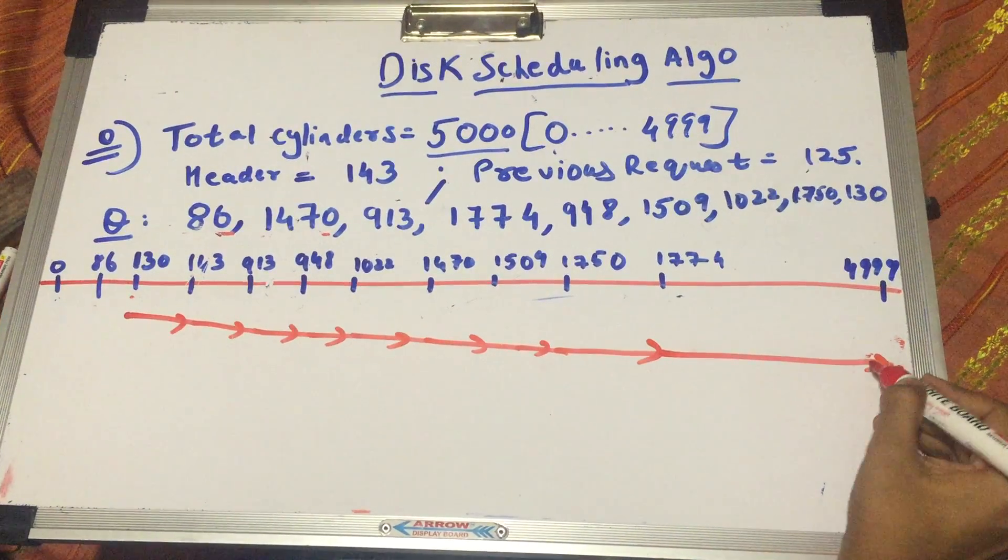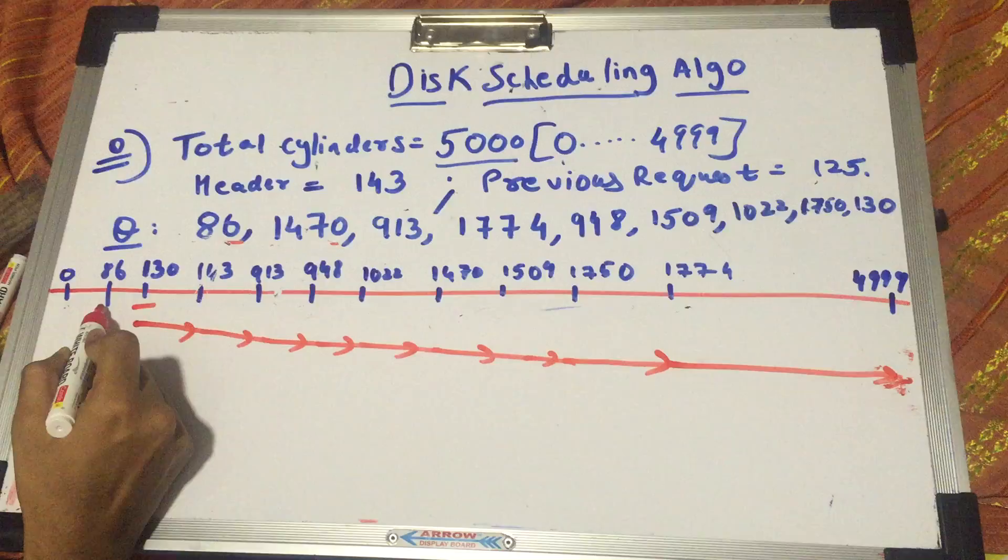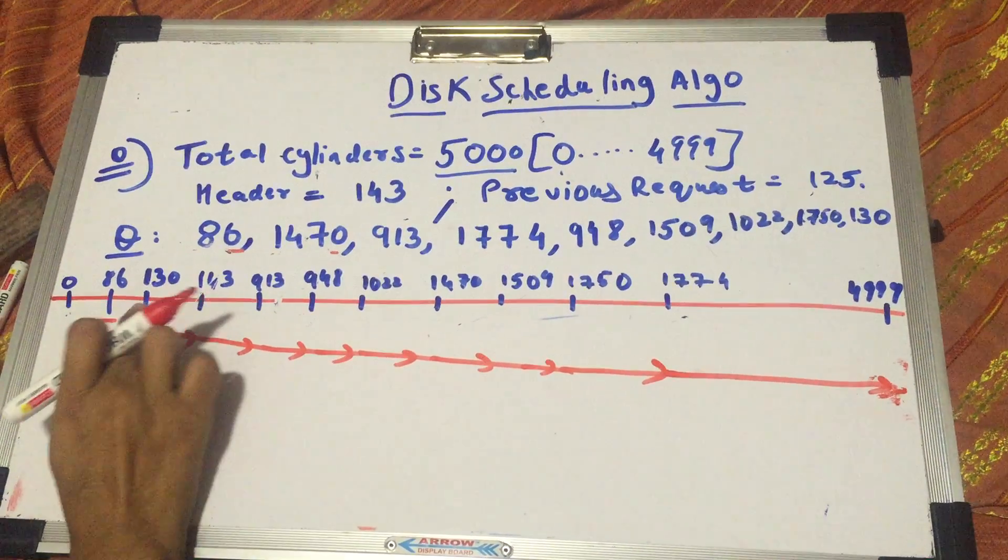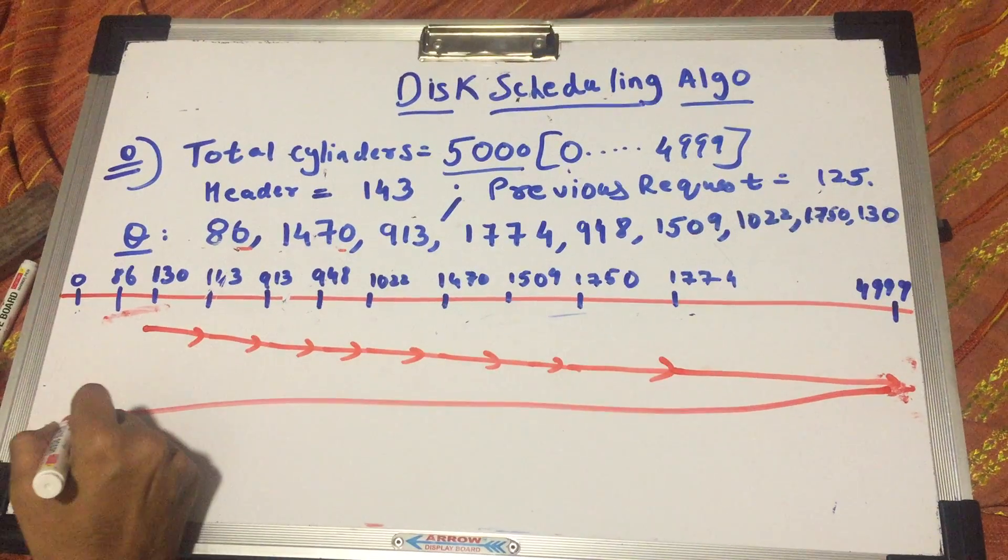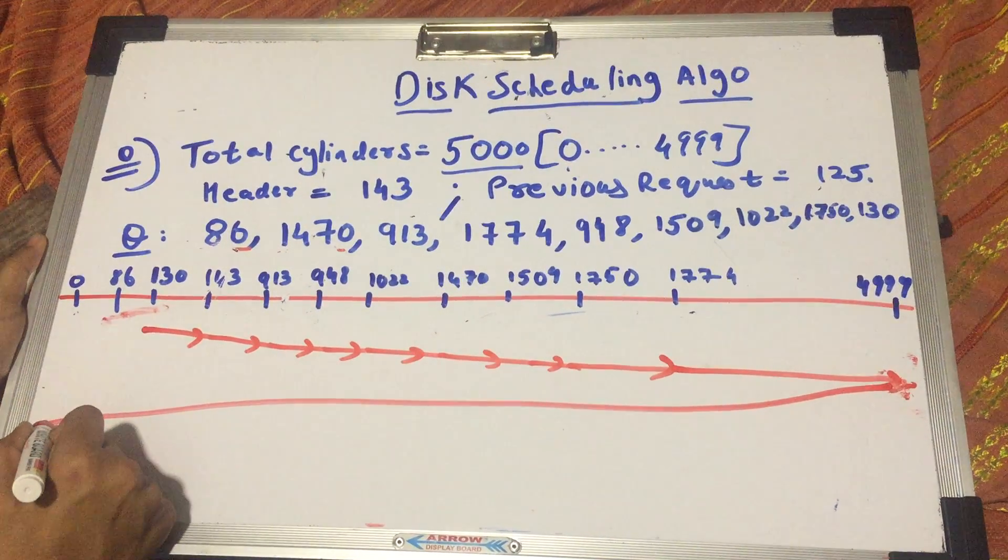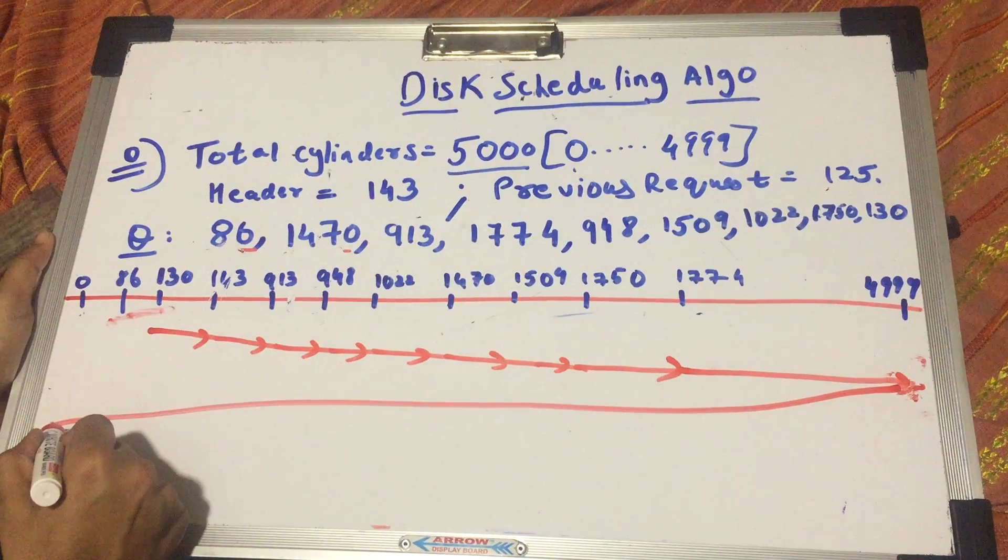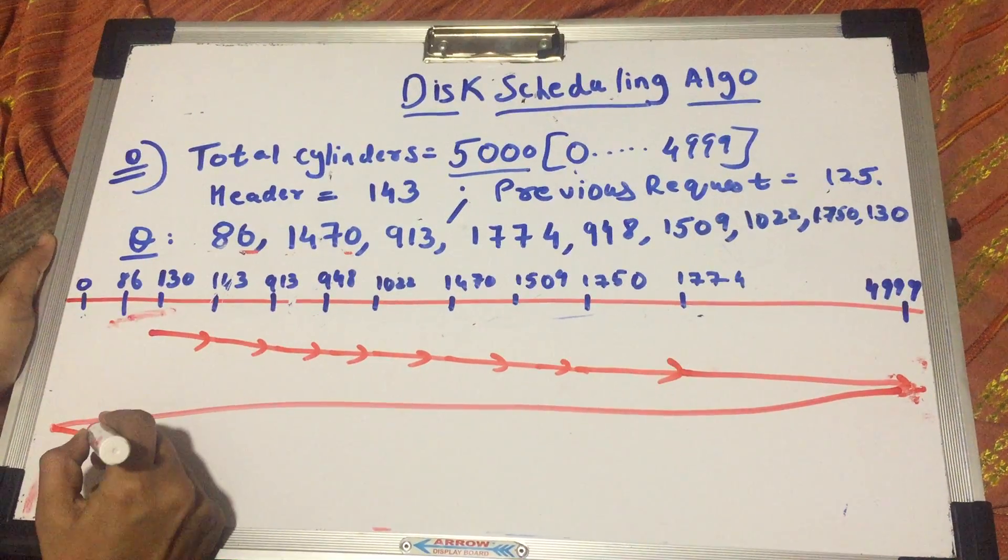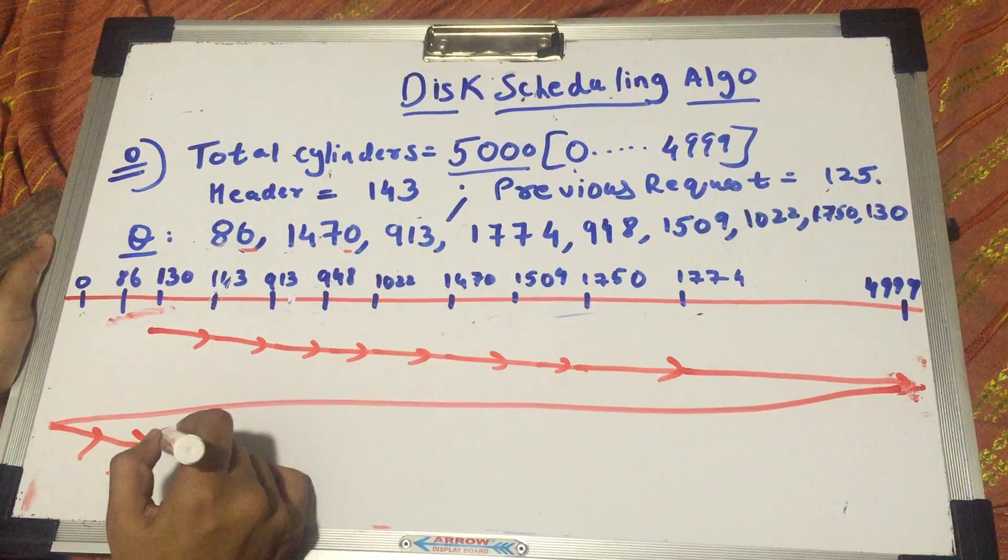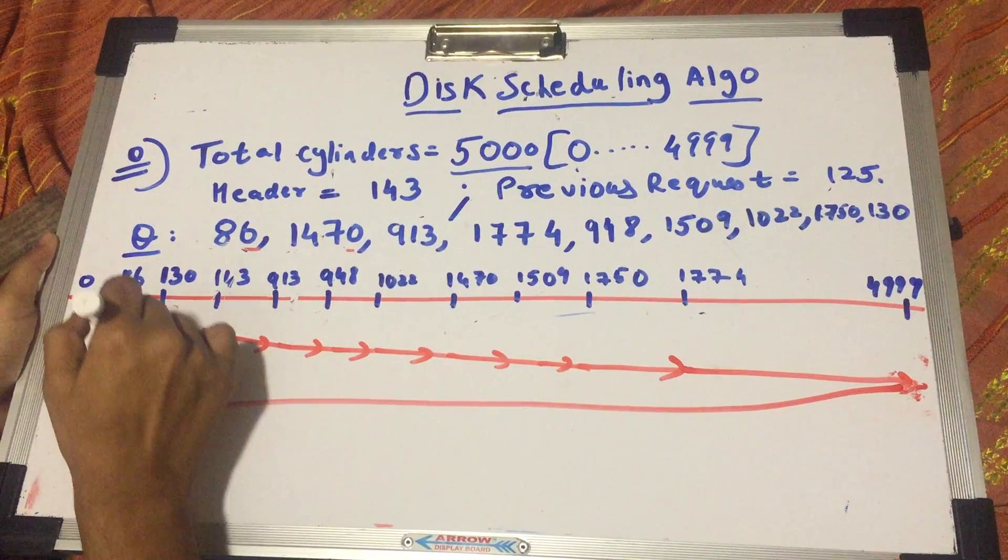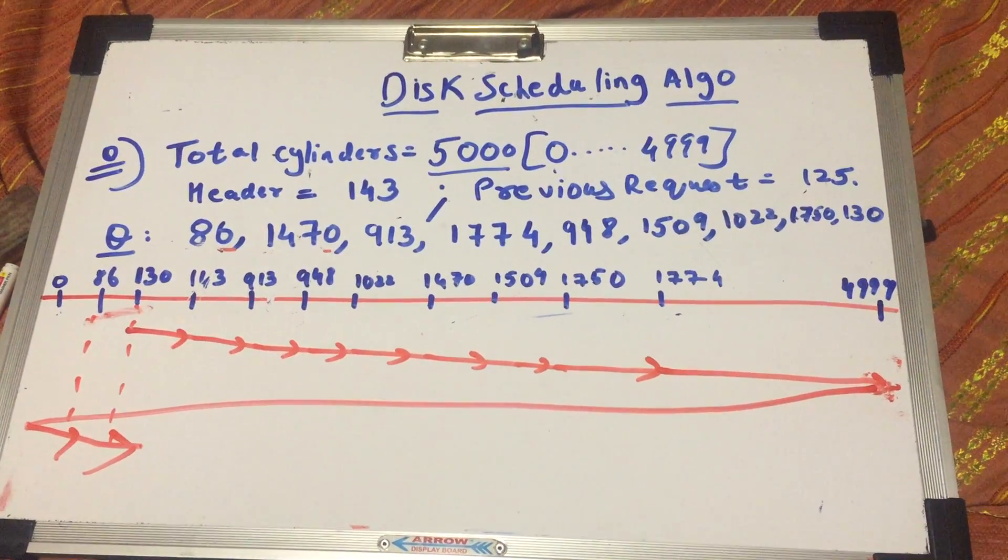Now, like I said, in my reverse direction, I cannot pick up 86 and 130. So what do I do? I have to reverse my direction by coming up to 0. And now, going in the same direction as I was going earlier, I go again to 86 and then I seek 86 cylinder and then I seek the 130th cylinder and this is where it ends. So this is how you do the C-SCAN.